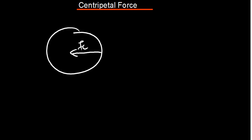When there is force there is also acceleration — an object can't move without acceleration. So if the force is directed toward the center as the centripetal force, then the centripetal acceleration is also directed in the same direction. We know that centripetal acceleration is given by the formula v squared over r.